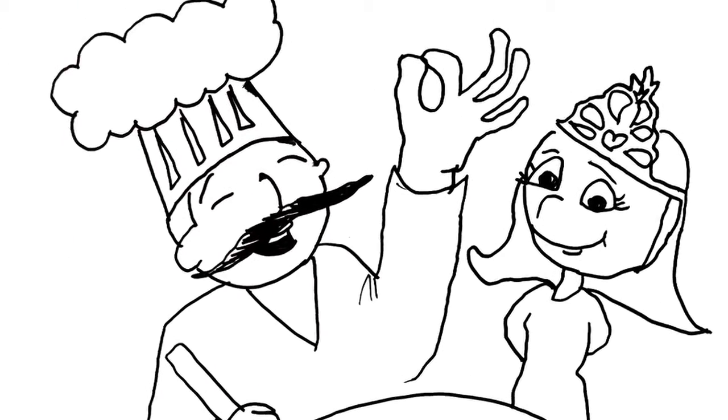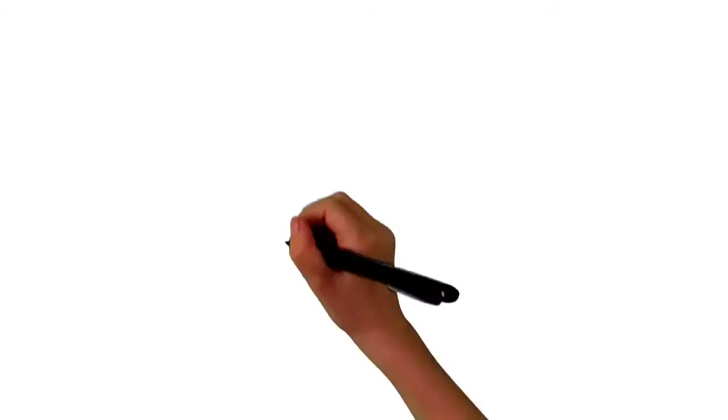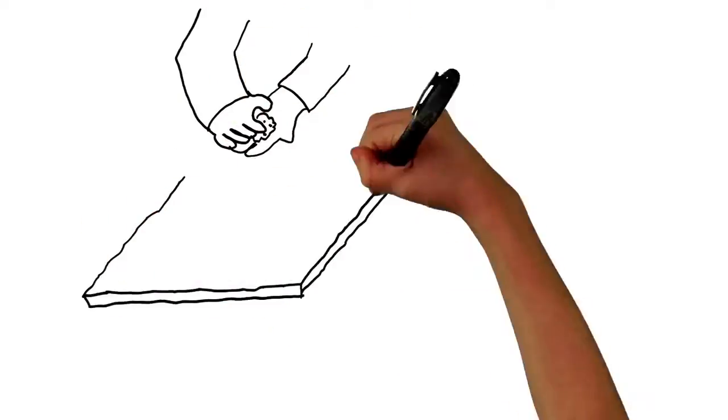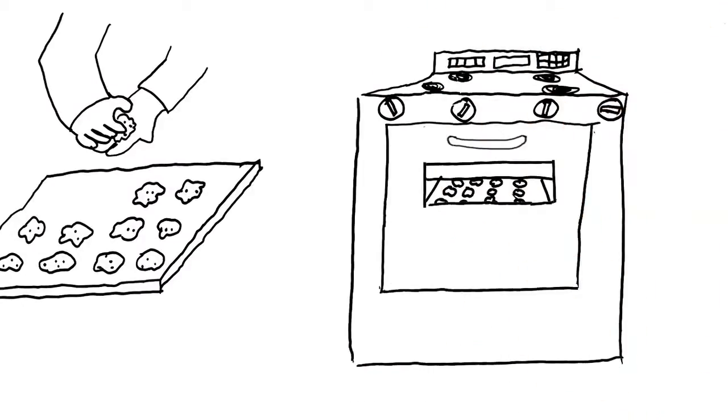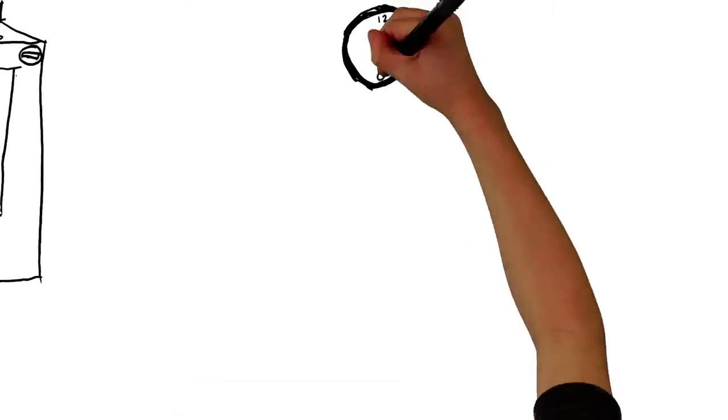Then they made little balls out of the cookie dough and put them on a pan. And then the chef put the pan into the oven and Olivia and the chef waited.